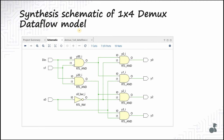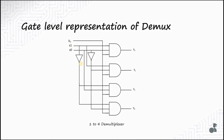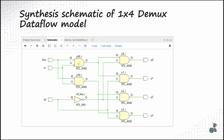This is the synthesized schematic of the 1-to-4 demultiplexer obtained from Vivado. From the gate level model we had 4 three-input AND gates, which would correspond to 8 two-input AND gates, but the synthesis tool has optimized the circuit and resulted in only 6 two-input AND gates and 1 inverter, while maintaining the same functionality. The signal DIN·S1_bar is reused for two AND gates, and DIN·S1 is reused for two others, thereby reducing the AND gate count from 8 to 6.